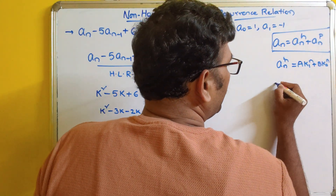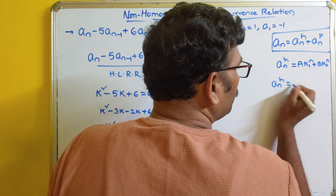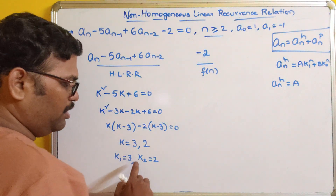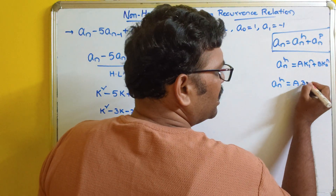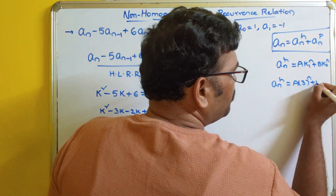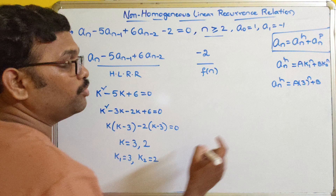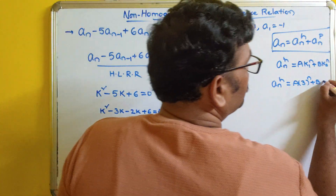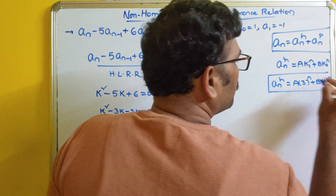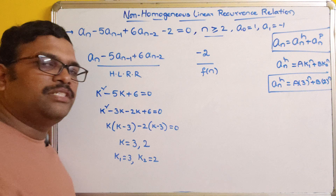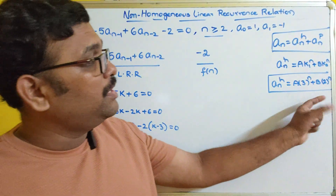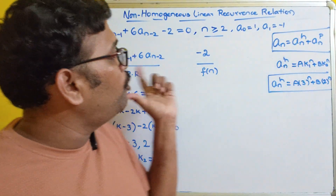So a_n_h = A·3^n + B·2^n. This is the general solution for the homogeneous part.